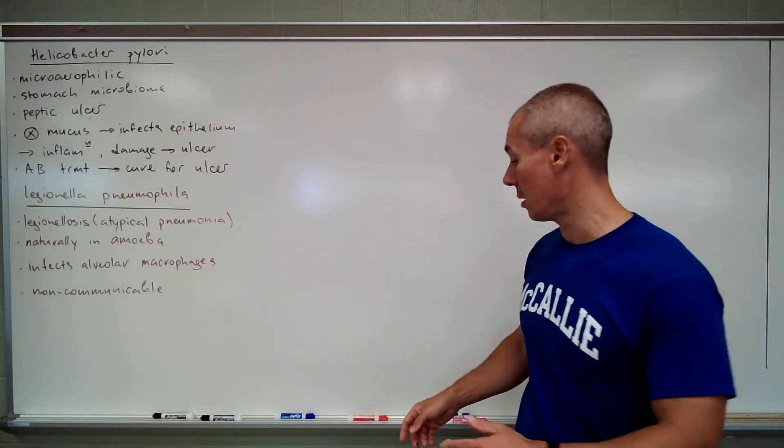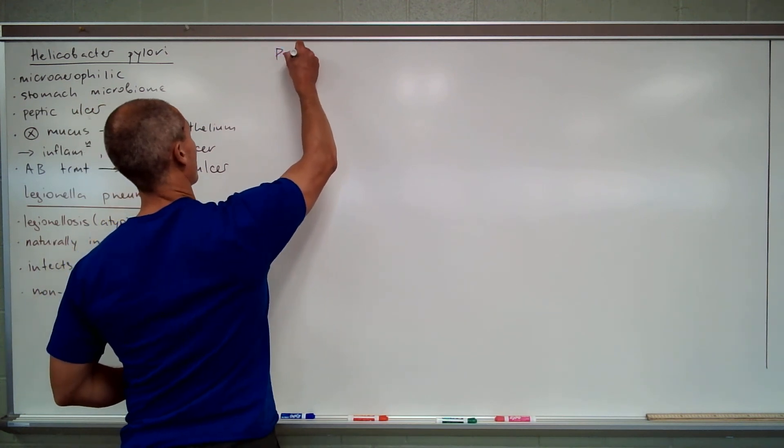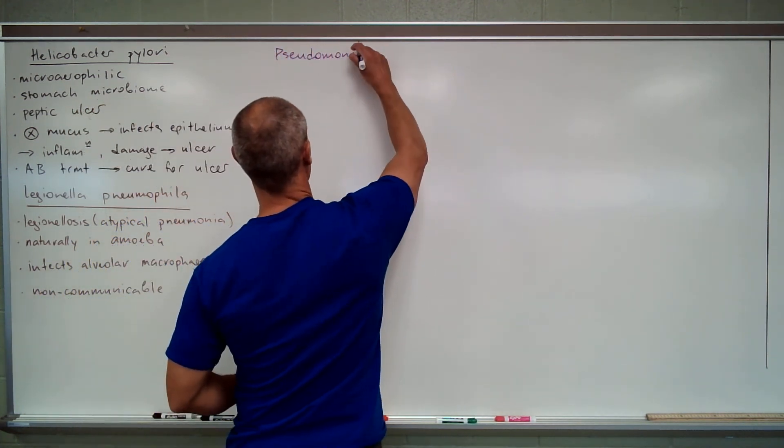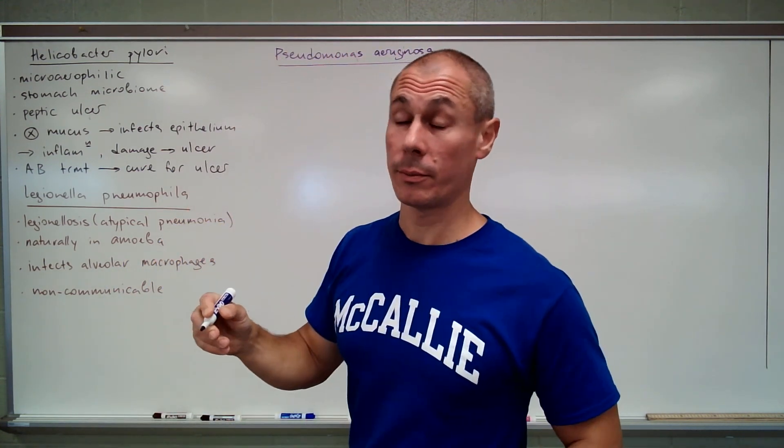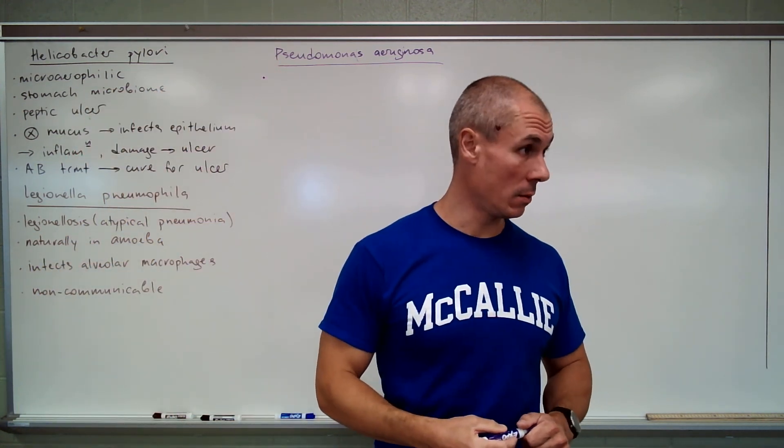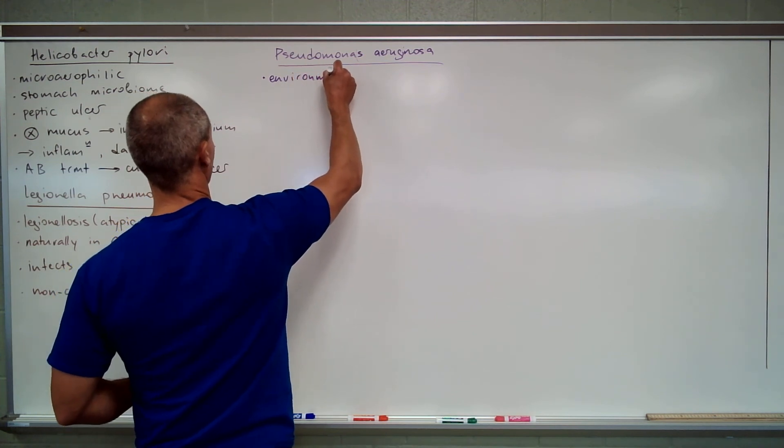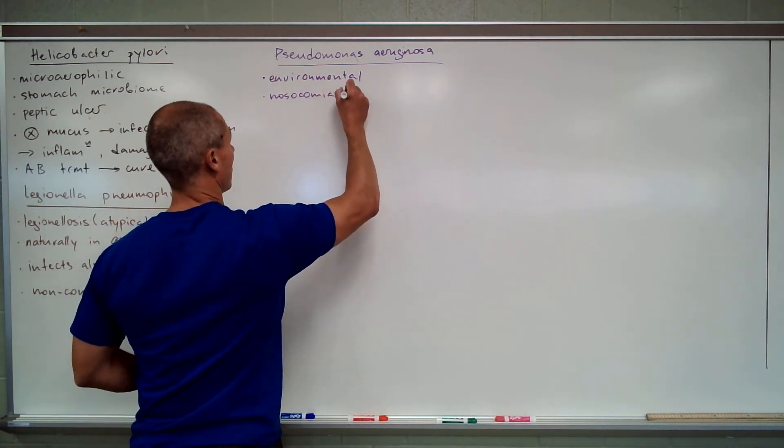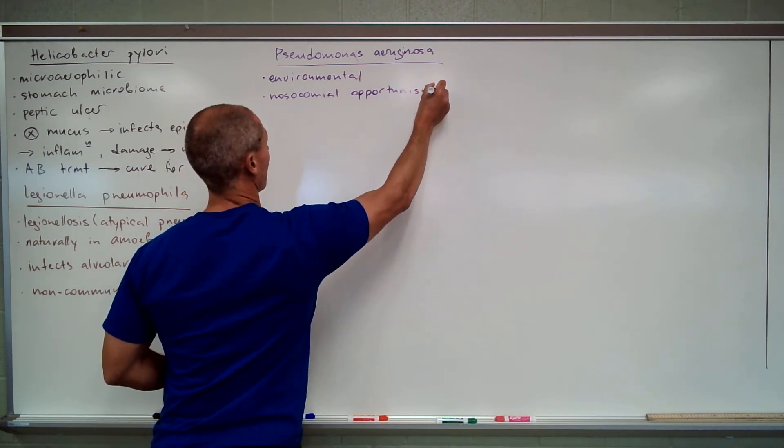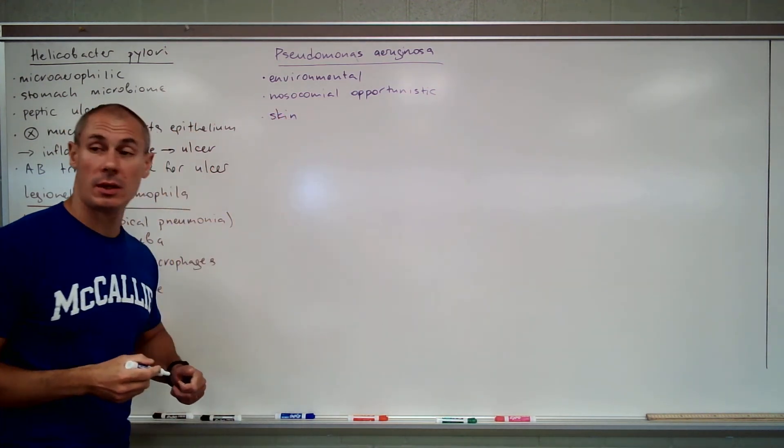Two more gram-negatives, the last gram-negatives here, are going to be Pseudomonas and Hemophilus influenzae. So Pseudomonas aeruginosa, yet another gram-negative. Now this is a really important clinical pathogen. The microorganism is normally found in the environment, but it is very easily transmitted in the nosocomial setting. So it's a nosocomial opportunistic pathogen. It's a scourge of various hospital wards.